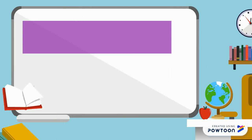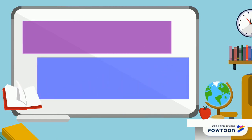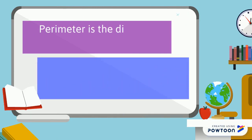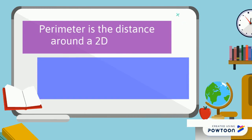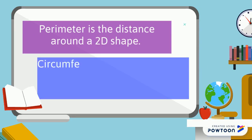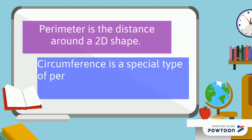Now that we've done a quick review of perimeter — remembering that perimeter is the distance around a 2D shape — we're going to talk about circumference. Circumference really is a special type of perimeter. Circumference is the distance around a circle.